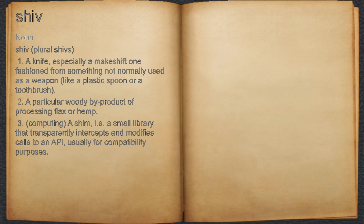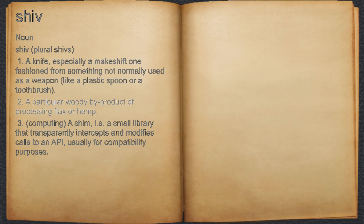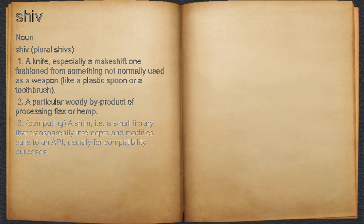Shiv. Noun. 1. A knife, especially a makeshift weapon fashioned from something not normally used as a weapon, like a plastic spoon or a toothbrush. 2. A particular woody by-product of processing flax or hemp. 3. Computing: a shim, i.e. a small library that transparently intercepts and modifies calls to an API, usually for compatibility purposes.